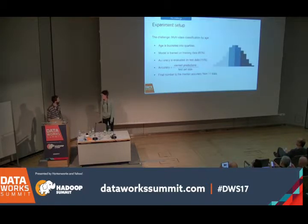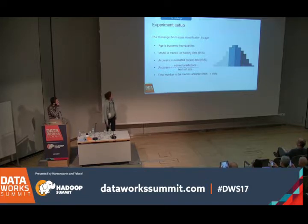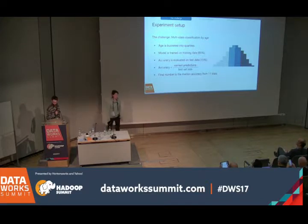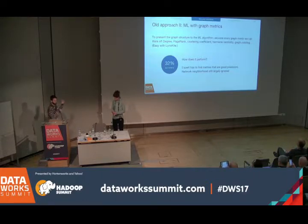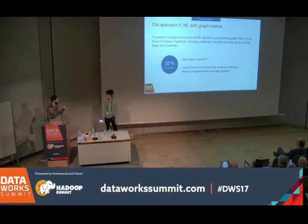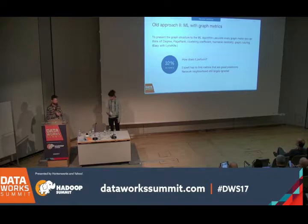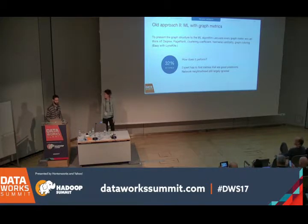I think we can do much better if we use the graph data as well. Just look at the file size — the friendship data is five times larger than the profile data. I think we should use that. Let's use graph metrics then. I'll just calculate all sorts of graph metrics like the degree of vertices, PageRank, clustering coefficient, harmonic centrality. And then use these as extra features. This way I generated more features and trained a better model — and it does have 32% accuracy.